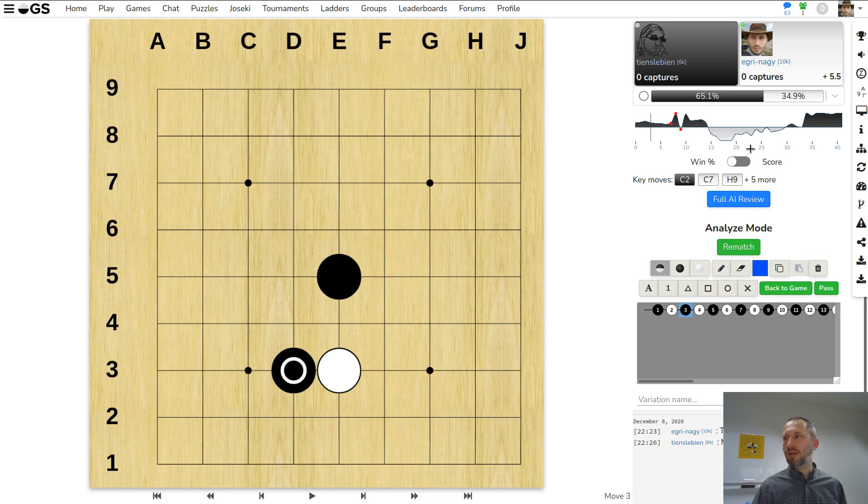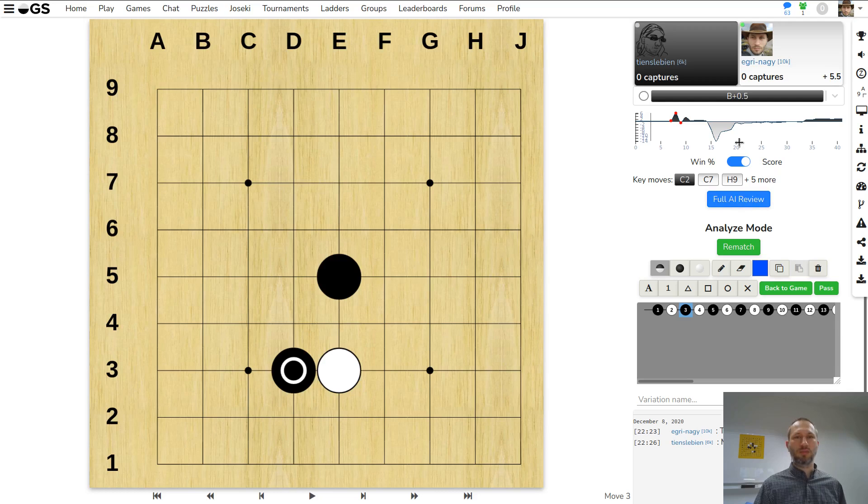Before we get into that, let's look at the graph. This is the win rate graph, and you can also get the score graph. This is the same game but it's a different piece of information because this will tell you what is the estimated final result. After these three moves, black is expected to win by half a point, but if we get into the game a bit more...